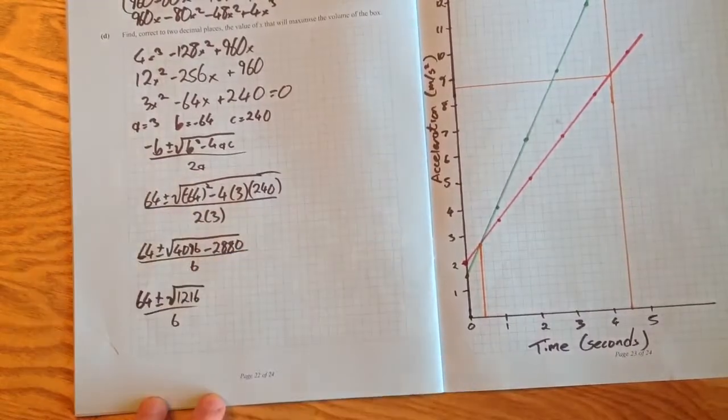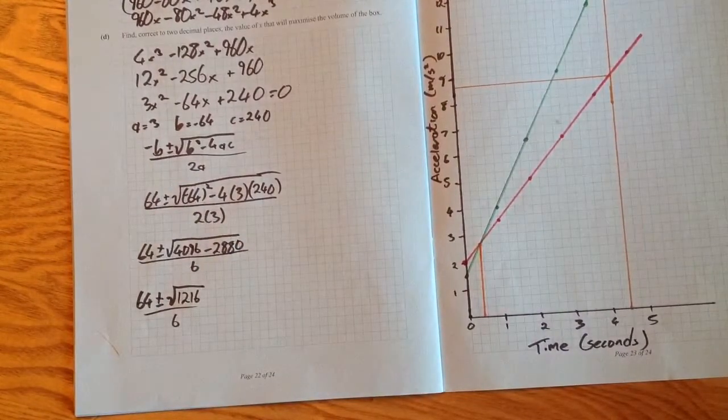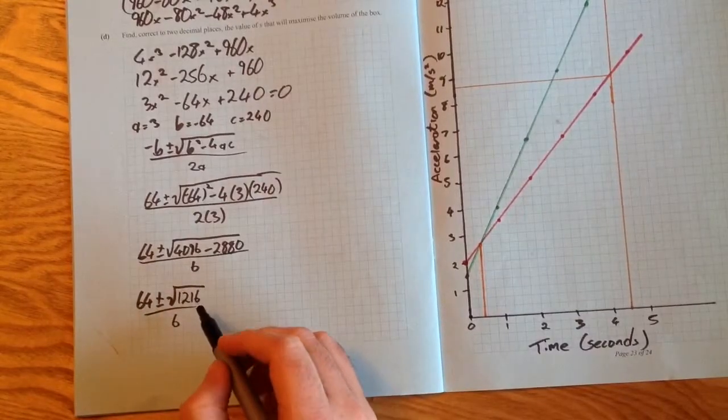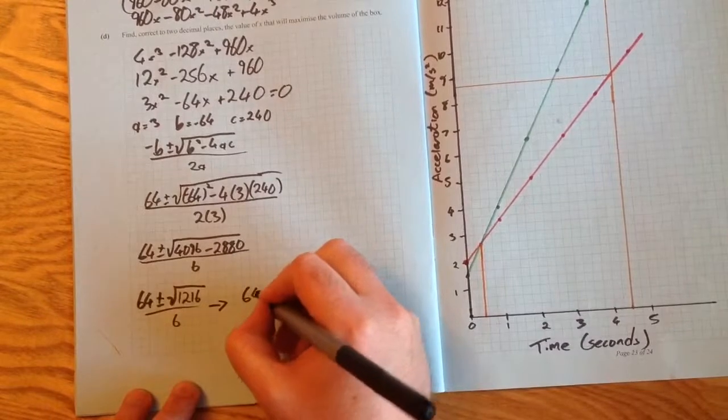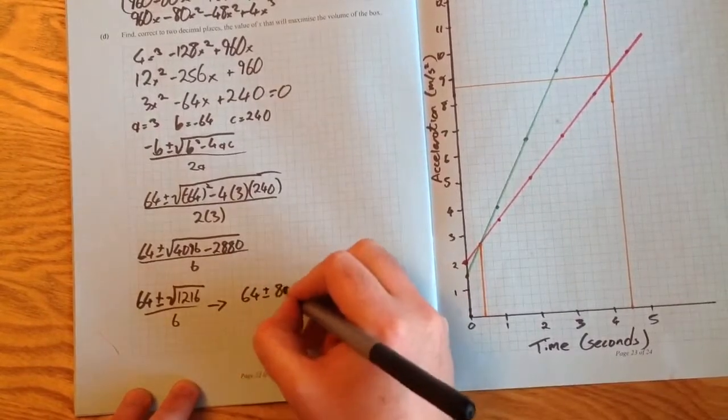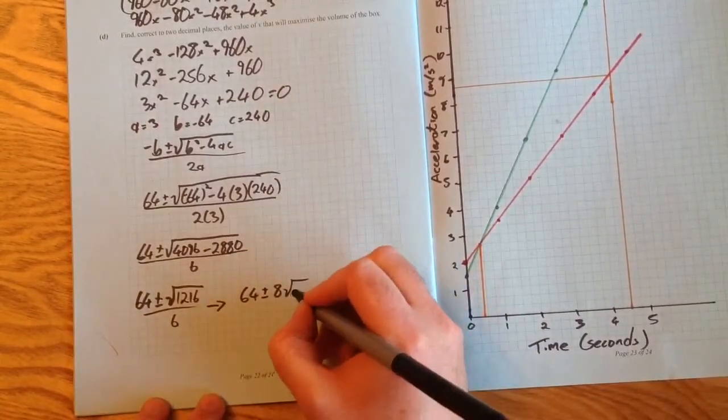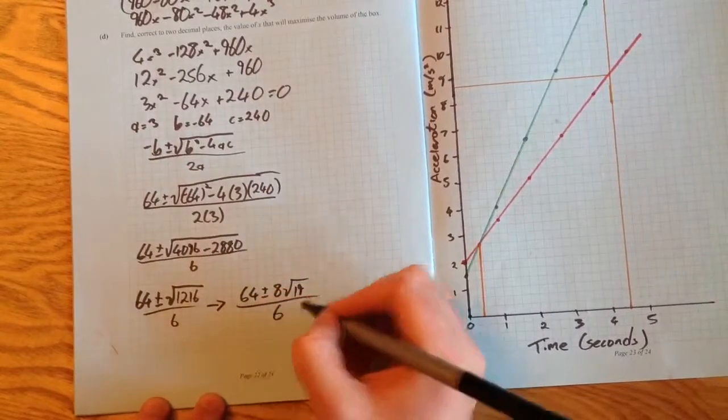Now we can simplify the square root of 1216. When you put that into your calculator, you get 64 plus or minus 8 root 19, all divided by 6.